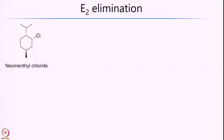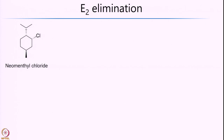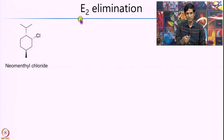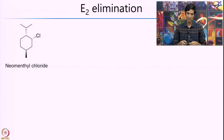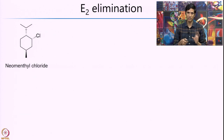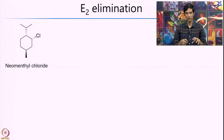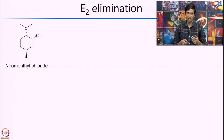Now let us look at what is called E2 elimination. E2 stands for an elimination reaction which is bimolecular in the rate-limiting step — analogous to the SN2 reaction — where both the base and the substrate are involved in the rate-determining step, and as a result we call it a bimolecular elimination reaction.